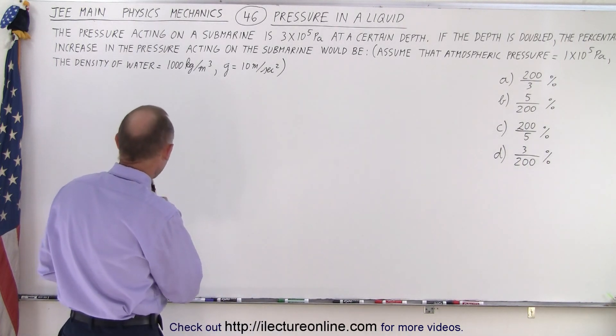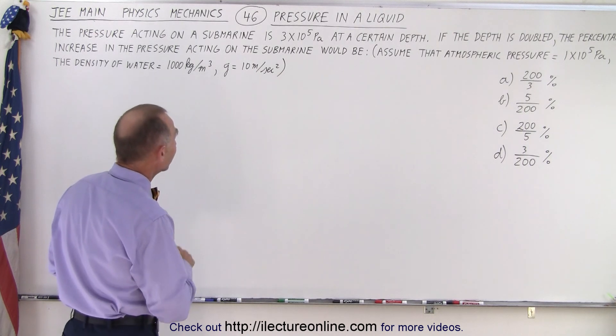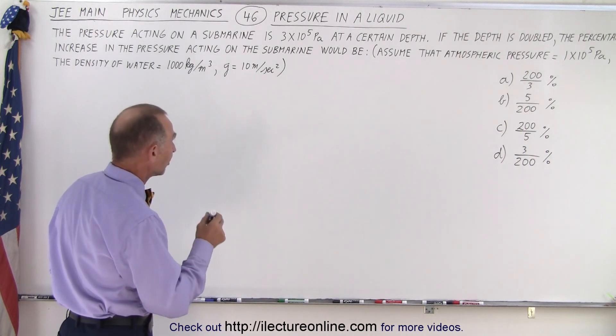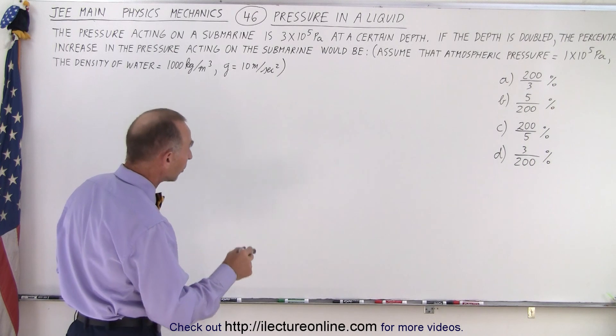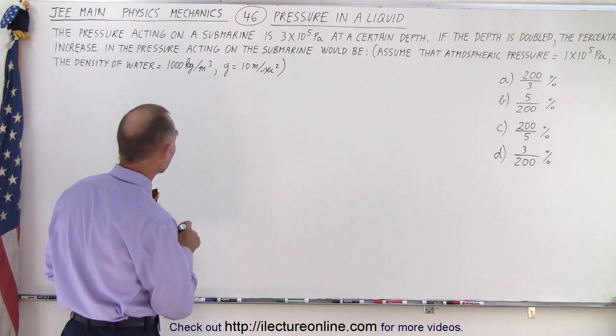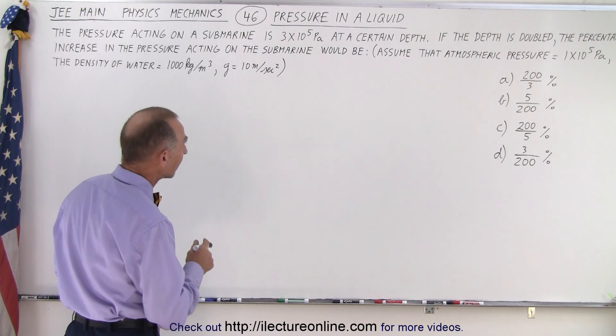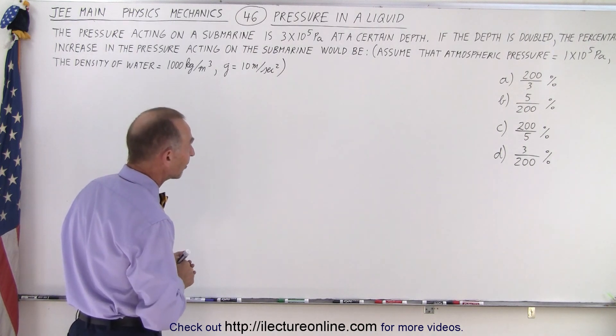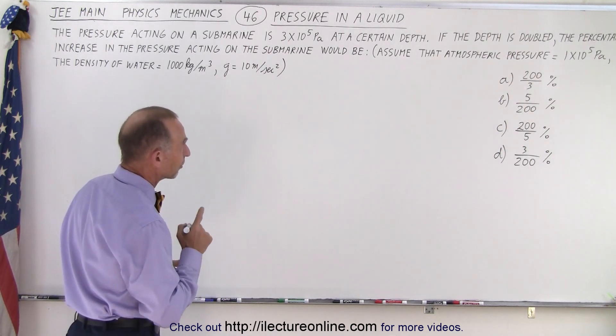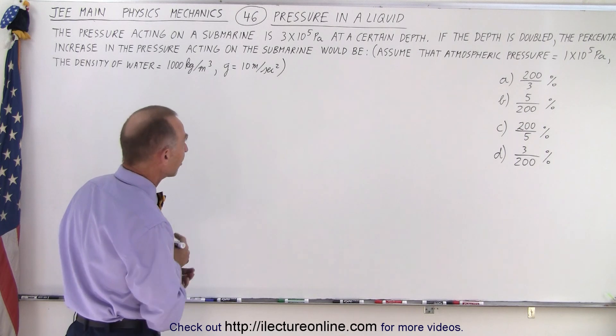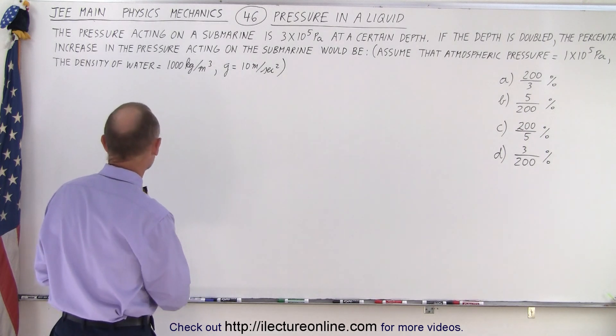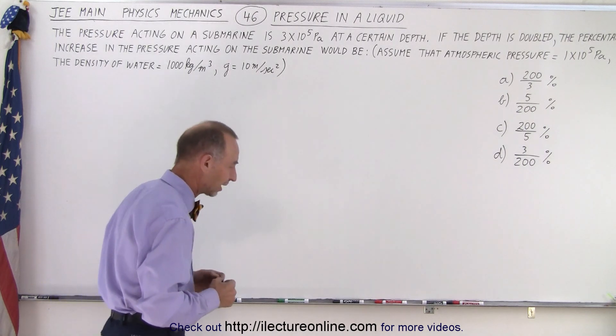The pressure acting on a submarine is 3 times 10 to the fifth pascals at a certain depth. If the depth is doubled, the percentage increase in the pressure acting on the submarine would be, of course we have four possible answers. We have to assume that atmospheric pressure is 1 times 10 to the fifth pascals, the density of water is 1000 kilograms per cubic meter, and g is 10 meters per second squared.